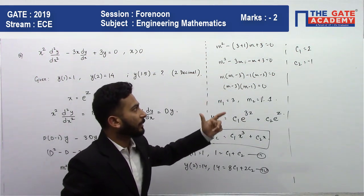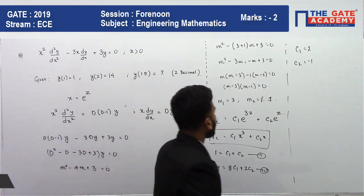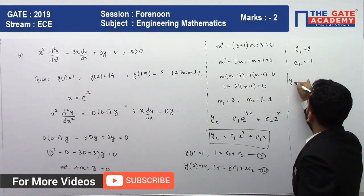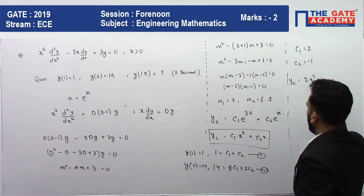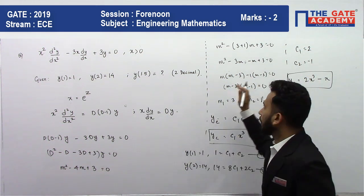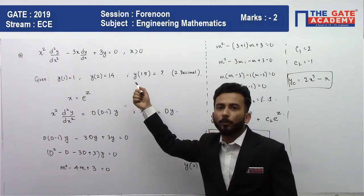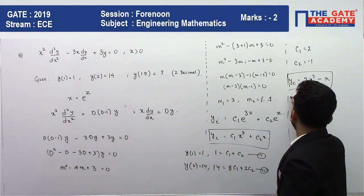The values you will be getting are c₁ = 2 and c₂ = -1. On putting this, I will be getting 2x³ - x as my final complementary function.